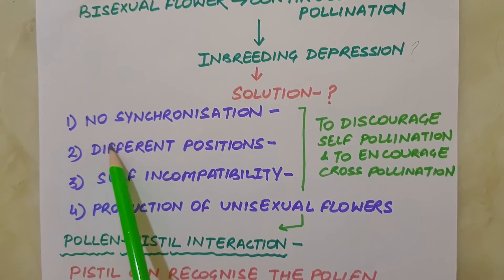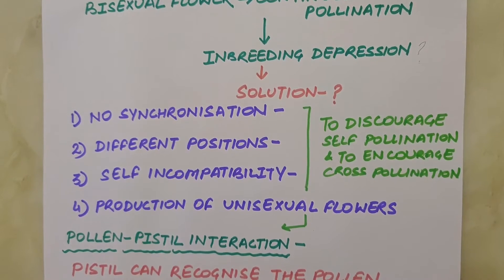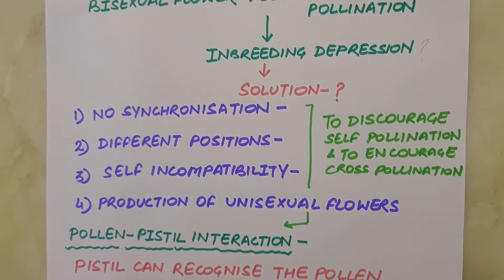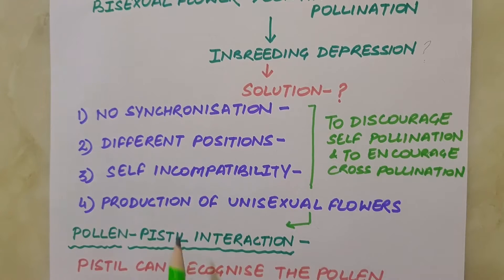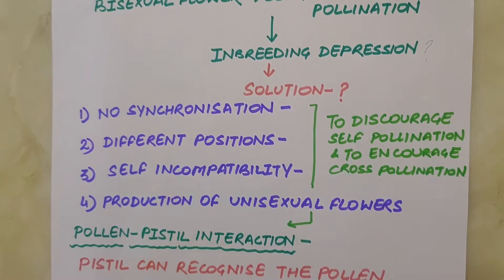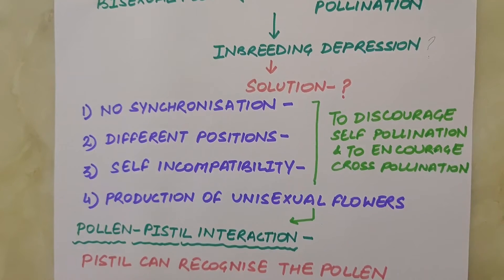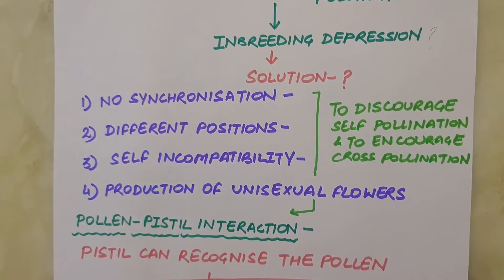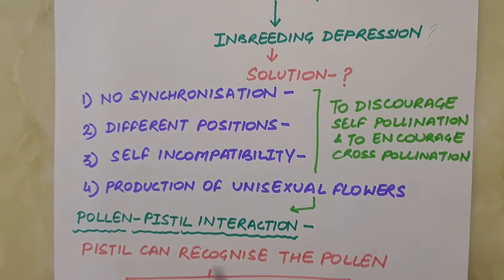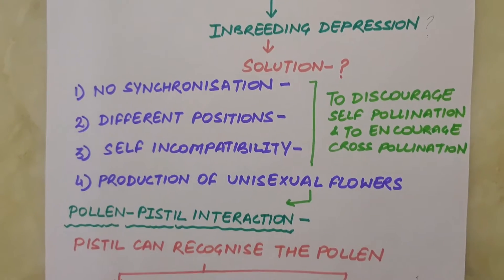The first outbreeding device is non-synchronization. In some species, pollen release and stigma receptivity are not synchronized — either the pollen is released before the stigma becomes receptive, or the stigma becomes receptive much before the release of pollen. The second device is different positions: in some species, the anther and stigma are placed at different positions so that pollen cannot come in contact with the stigma of the same flower. Both these devices prevent autogamy.